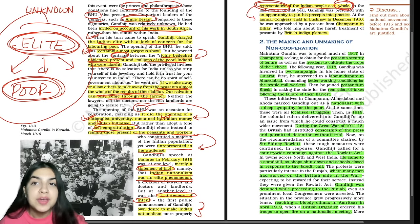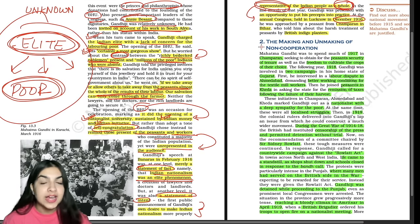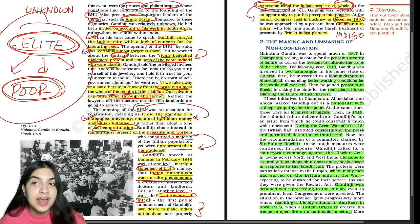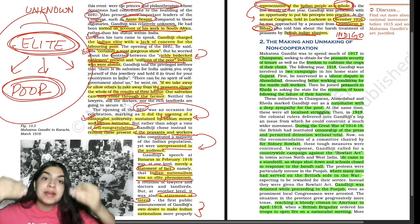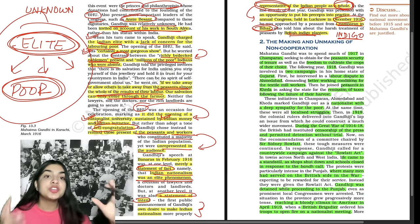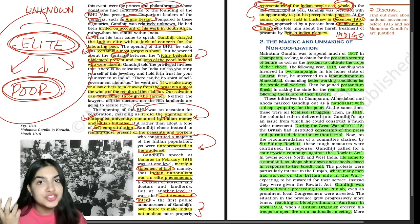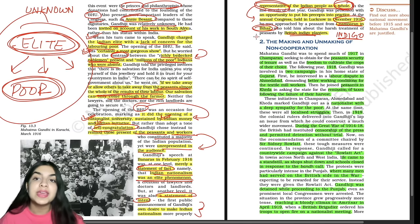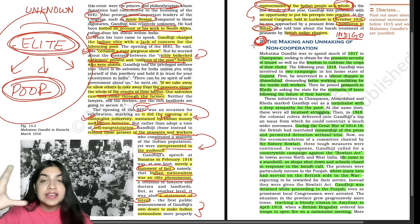In December 1916, Gandhi ji got a chance to put his ideas into practice. This is what we have read in the Indigo chapter of Class 12 English — how Gandhi ji helped Indigo planters in Champaran, Bihar. This was the implementation of what was said in the speech in February 1916. Much of 1917 was spent in Champaran for obtaining peasant security of tenure and freedom to cultivate the crops of their choice. In 1918, two campaigns were conducted in his home state of Gujarat: a labor dispute in Ahmedabad demanding better working conditions for textile mill workers, and a campaign for peasants in Kheda district demanding remission of taxes following the failure of their harvest.